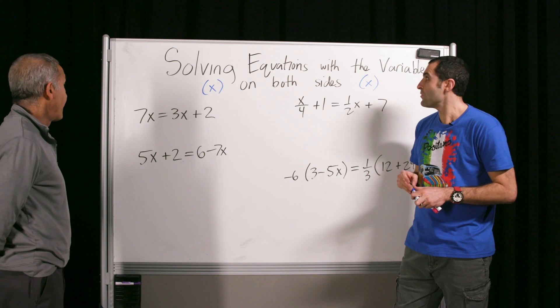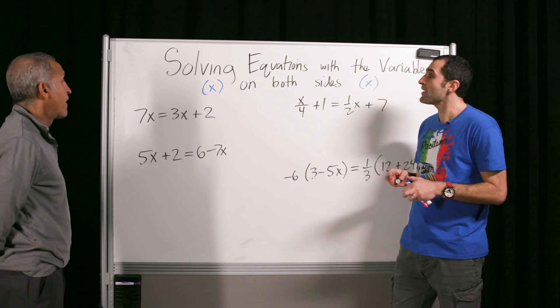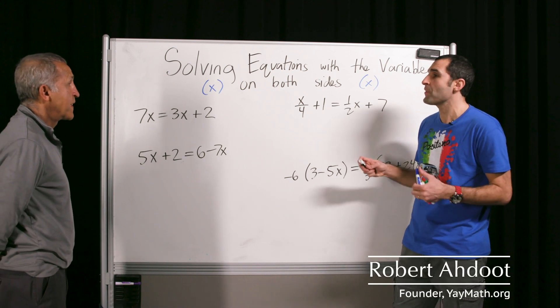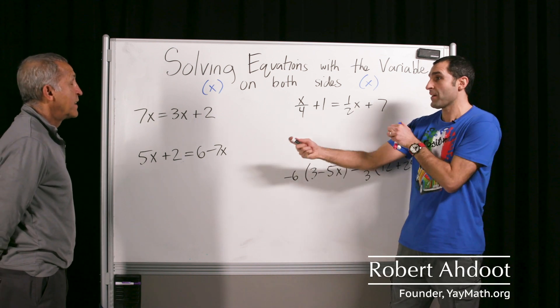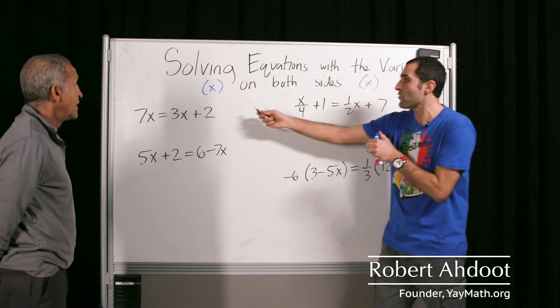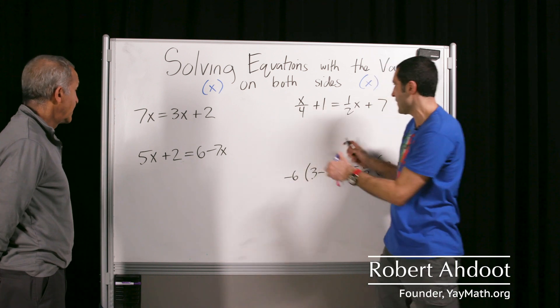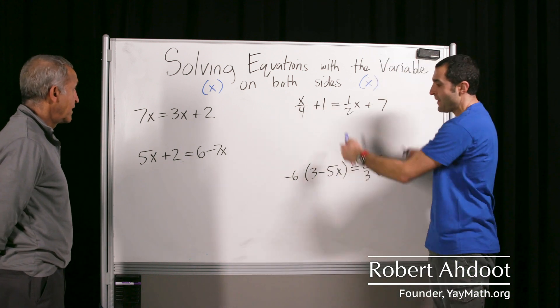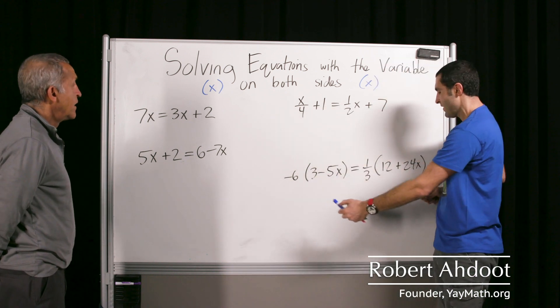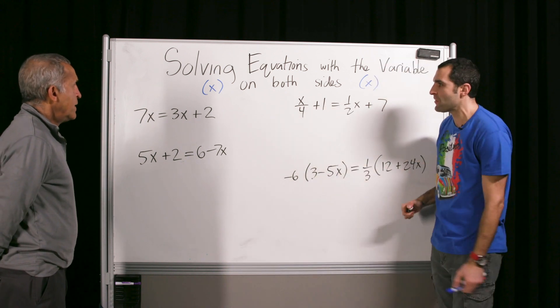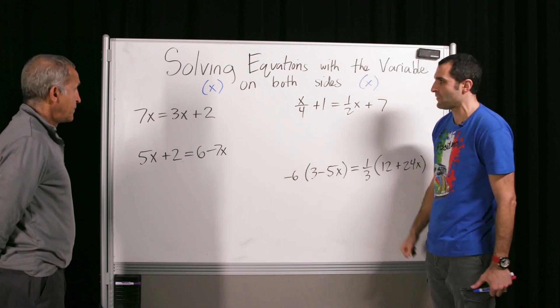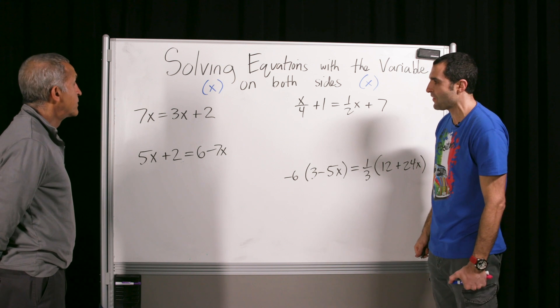So now we are going to be solving equations with the variable — the unknown — on both sides of the equation. That's something we haven't done yet, and that's pretty much the progression where we led up to.